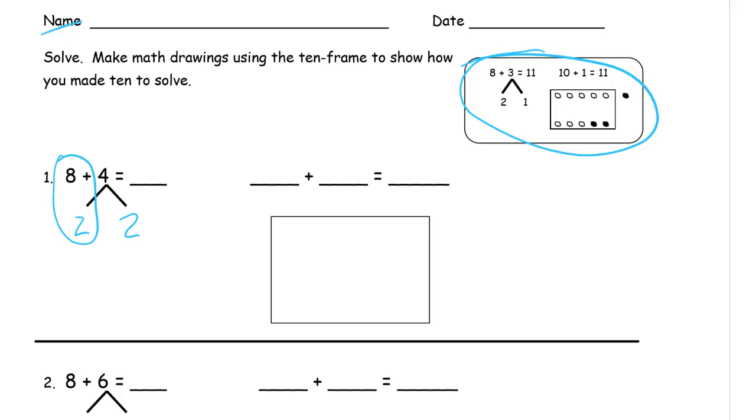And then we still have the 2 that's left over from the rest of the 4. Now when we draw our picture, this box right here is supposed to be a 10 frame box. And it really helps to draw it as a 10 frame like that. So here, this is what happens. We have 8: 1, 2, 3, 4, 5, 6, 7, 8.